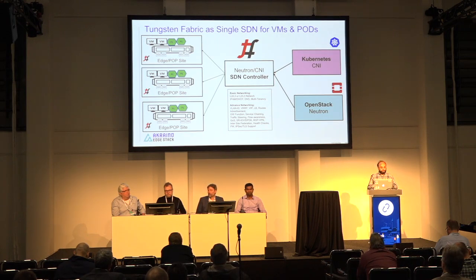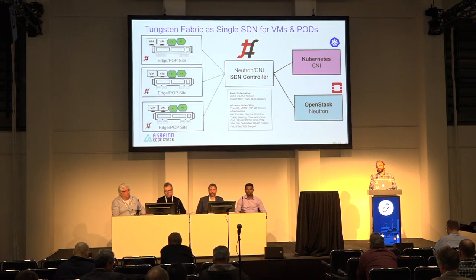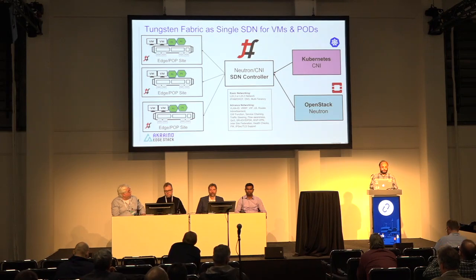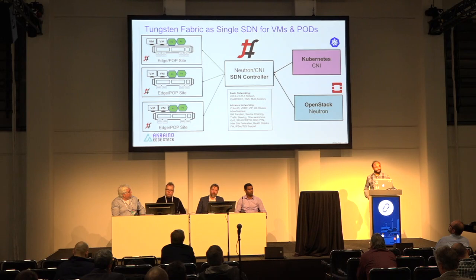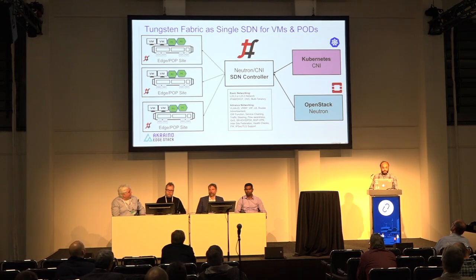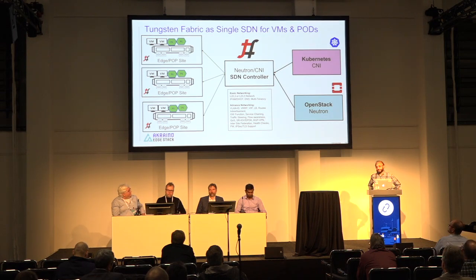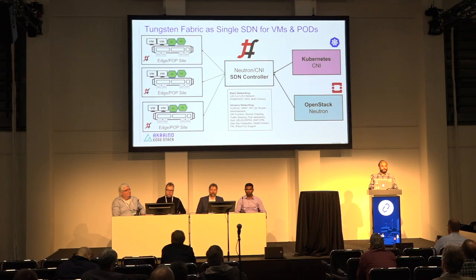One of the biggest benefits of this integration is the networking features. That is one of the biggest strengths of Tungsten Fabric — it provides very feature-rich, advanced networking. What this integration does for users, customers, and providers is they get to take benefit of all of these features as part of the Akraino integration. The system looks like an orchestration and monitoring system with full monitoring capability of all remote sites. It's fully secure end-to-end — we can have full IPsec-level security between the sites.